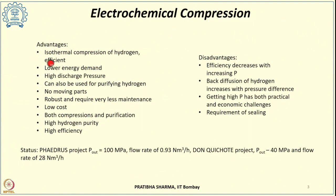The major advantages of this process are that the operation of electrochemical compressors is almost isothermal, making them more efficient and consuming less energy. We can achieve high discharge pressures. They do not have moving parts, resulting in no vibrations or noise. They are quite robust and require very little maintenance, lowering both operating and capital costs. High hydrogen purity and high efficiency are achievable, though the high efficiency is at comparatively lower flow rates.